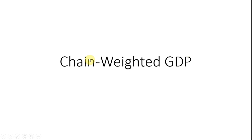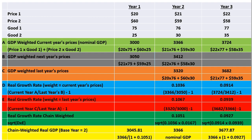In this video, we're going to calculate chain-weighted real GDP. We have an economy with two goods and data for three years. In each year, we have the price of good one, the price of good two, the quantity of good one, and the quantity of good two.